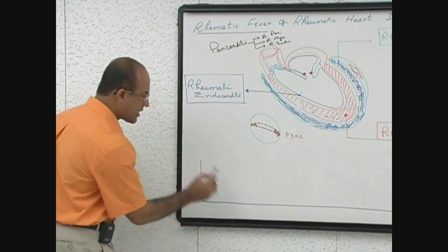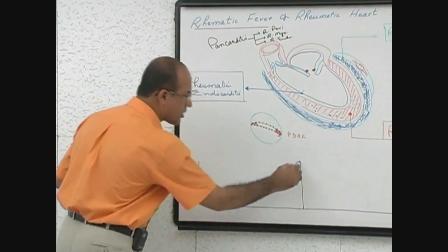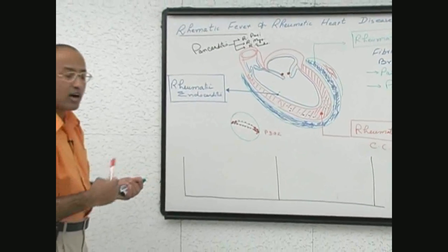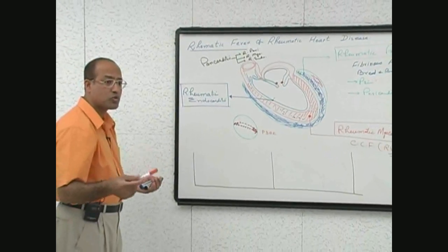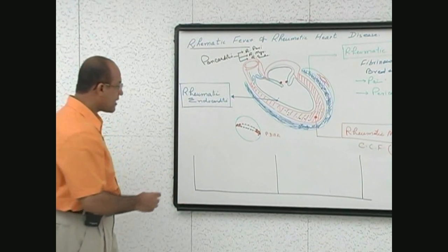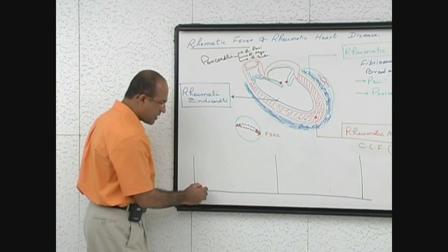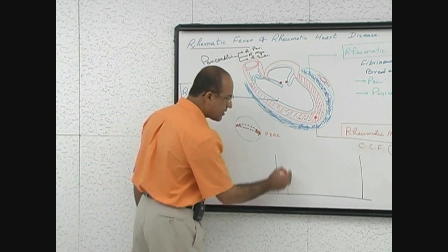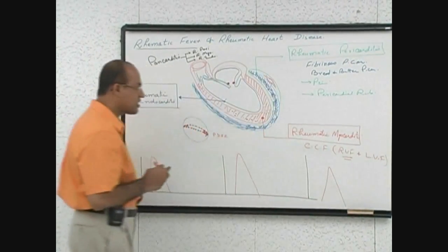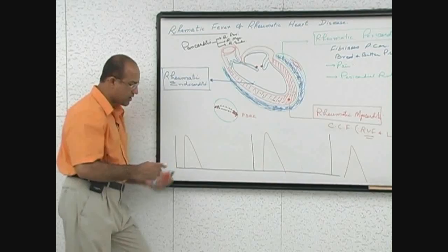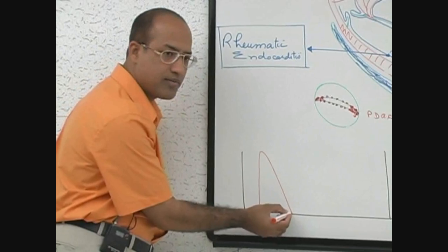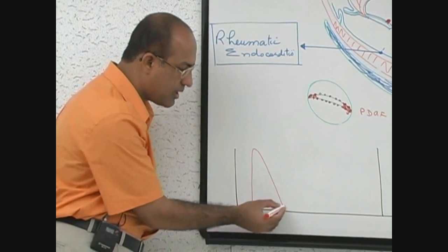Consider this timeline: there is a streptococcal infection, again streptococcal infection, again streptococcal infection. If this is a person belonging to the 2 to 3 percent of the population who are vulnerable for rheumatic fever, then after streptococcal pharyngitis they develop rheumatic fever. During rheumatic fever, the skin lesions form and totally disappear.